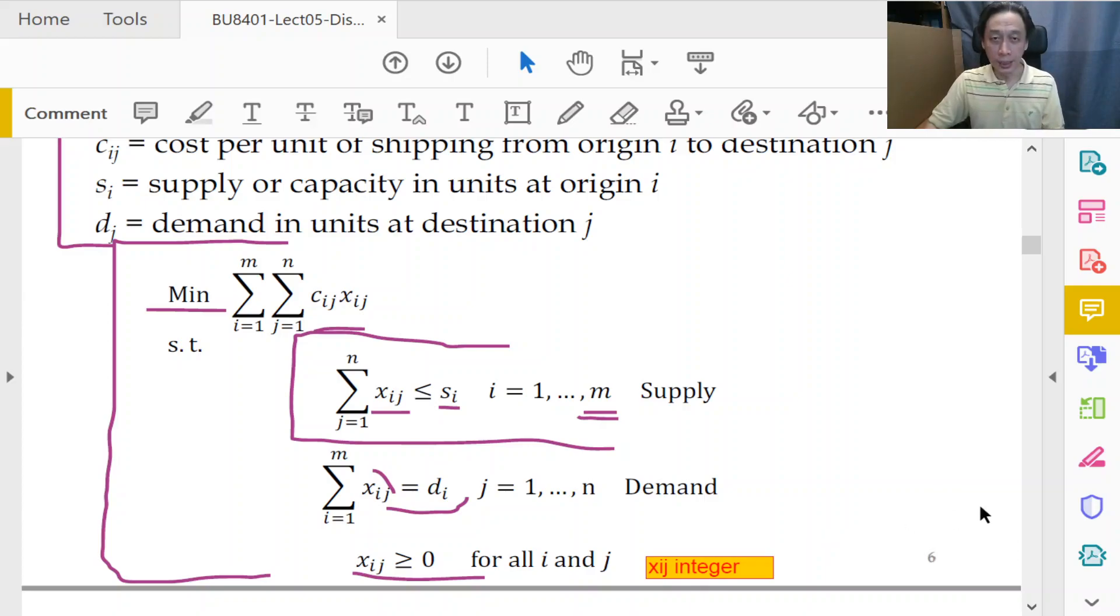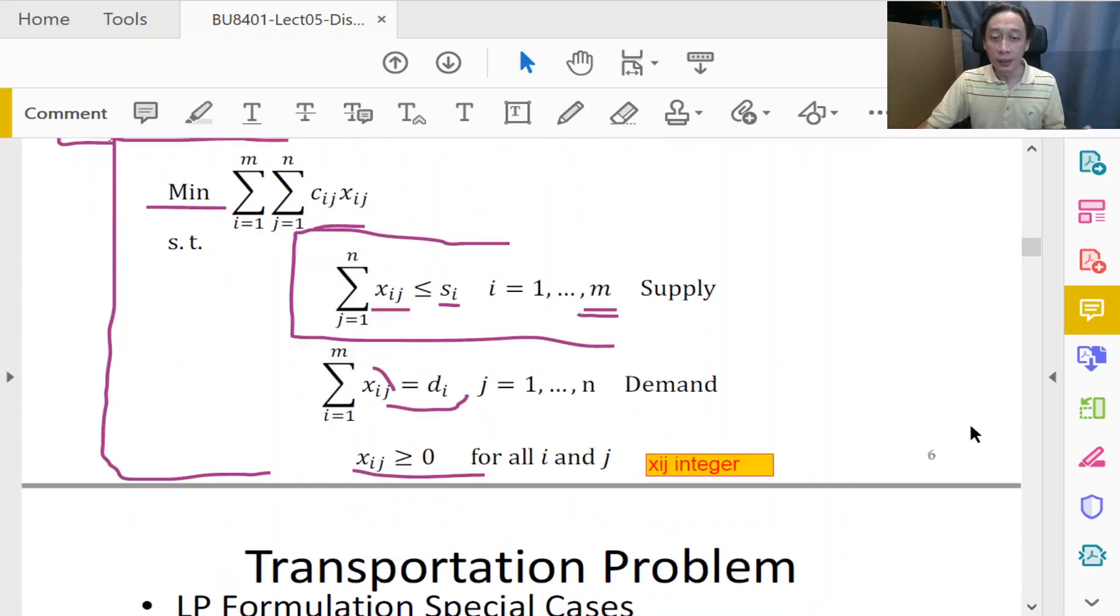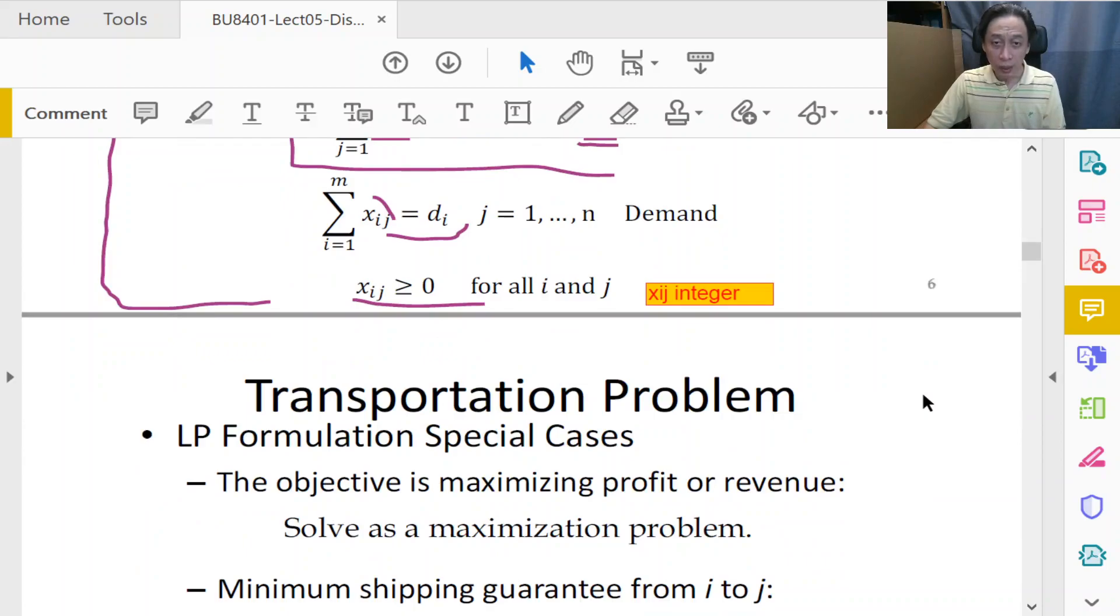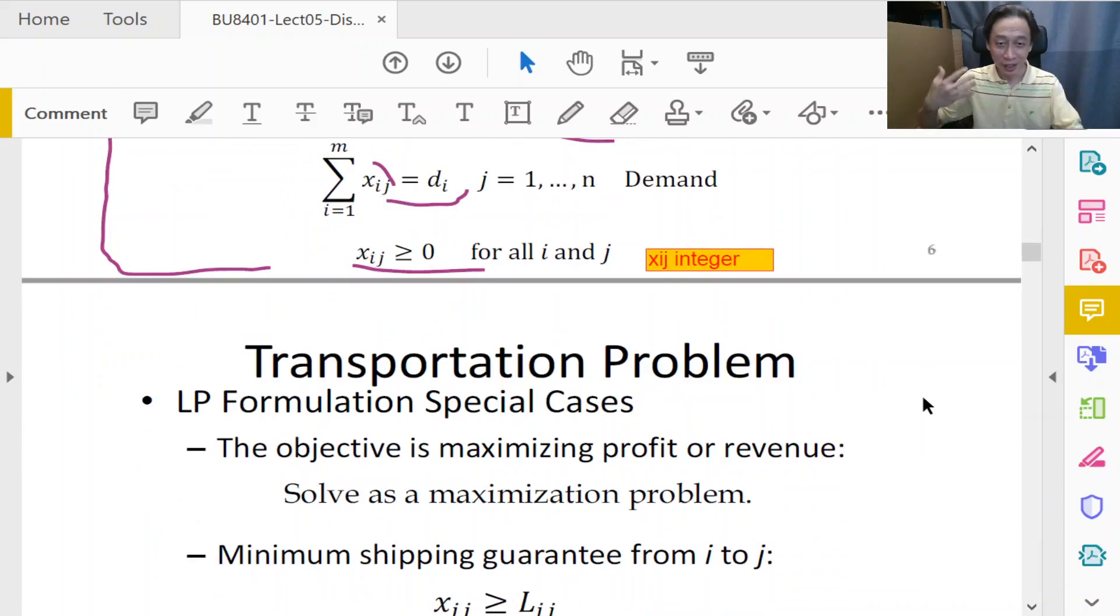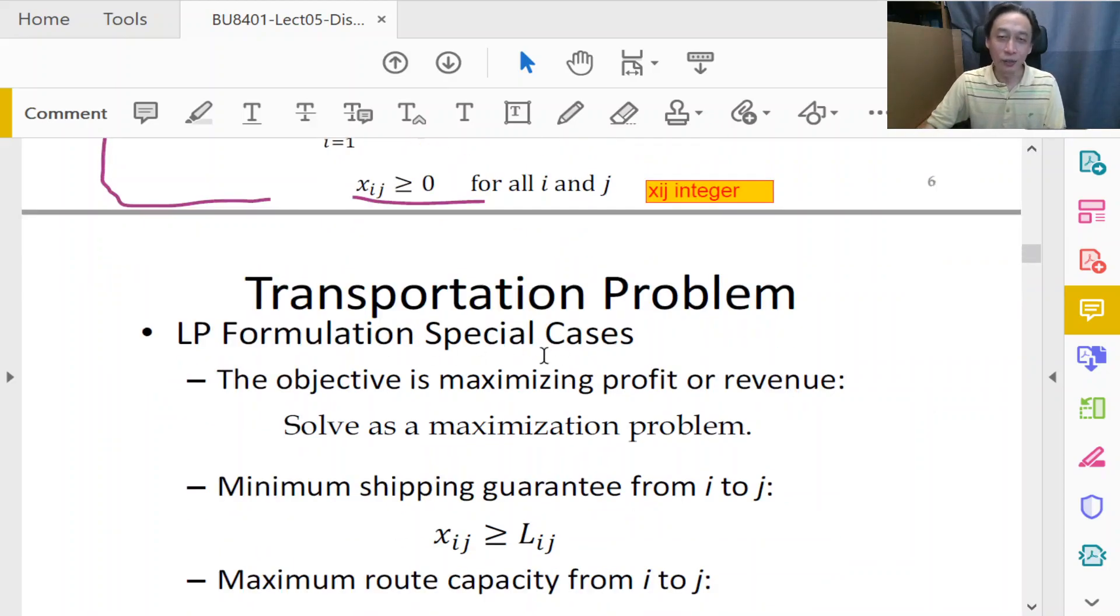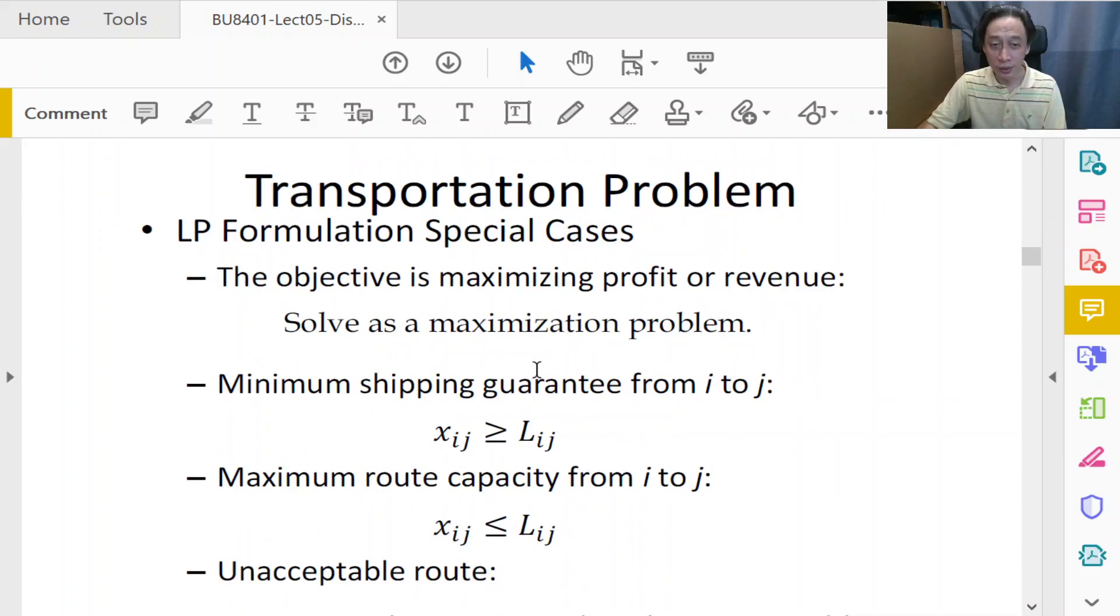That basically describes the entire transportation problem in a generic way. We can then spend the rest of the time engaging with our customers to talk about specialization of cases, customization, special conditions. For example, we have talked about minimizing total costs. There may be times when we want to solve it as a maximization problem. It's difficult to think about logistics to turn out to be a maximization problem, but if we can cast other problems to become a transportation problem, then maximization might seem natural.